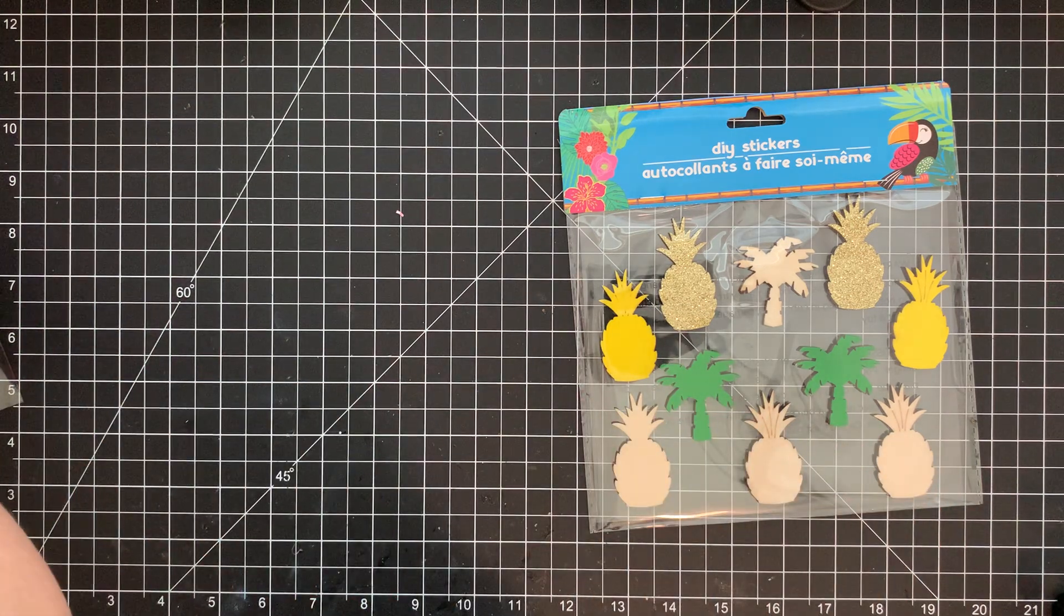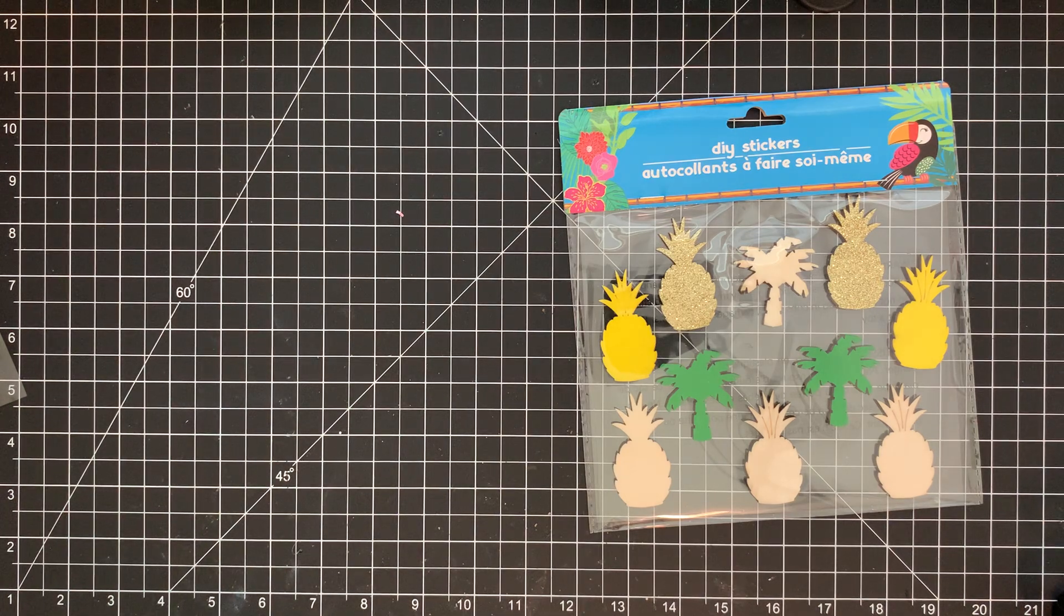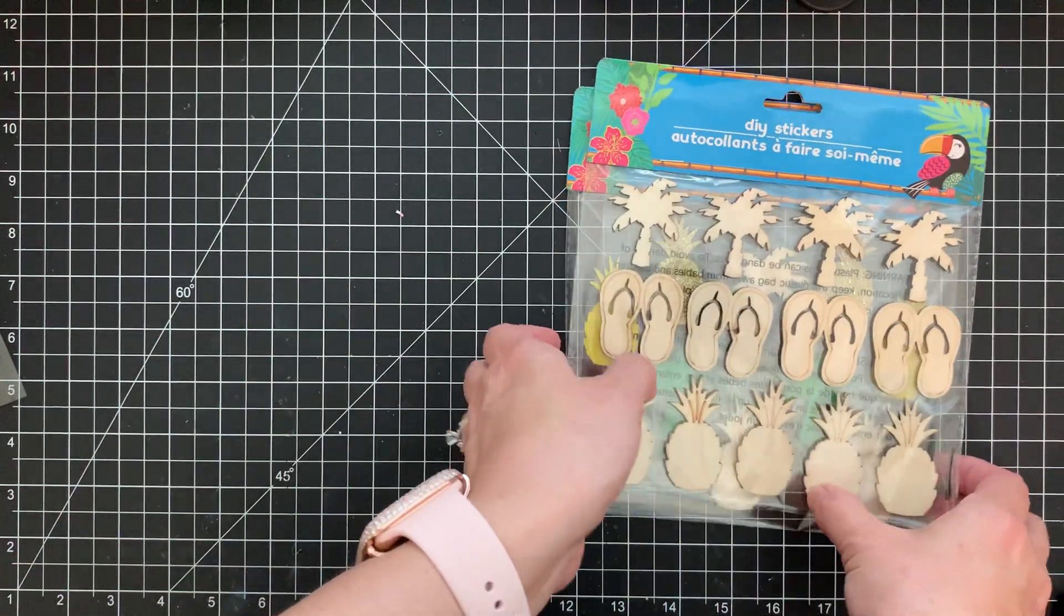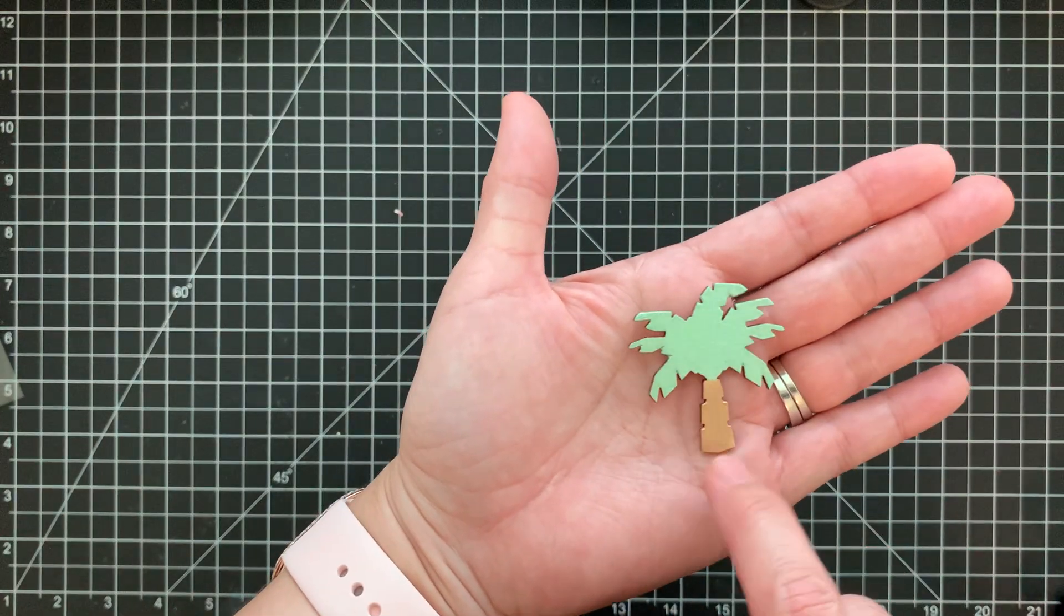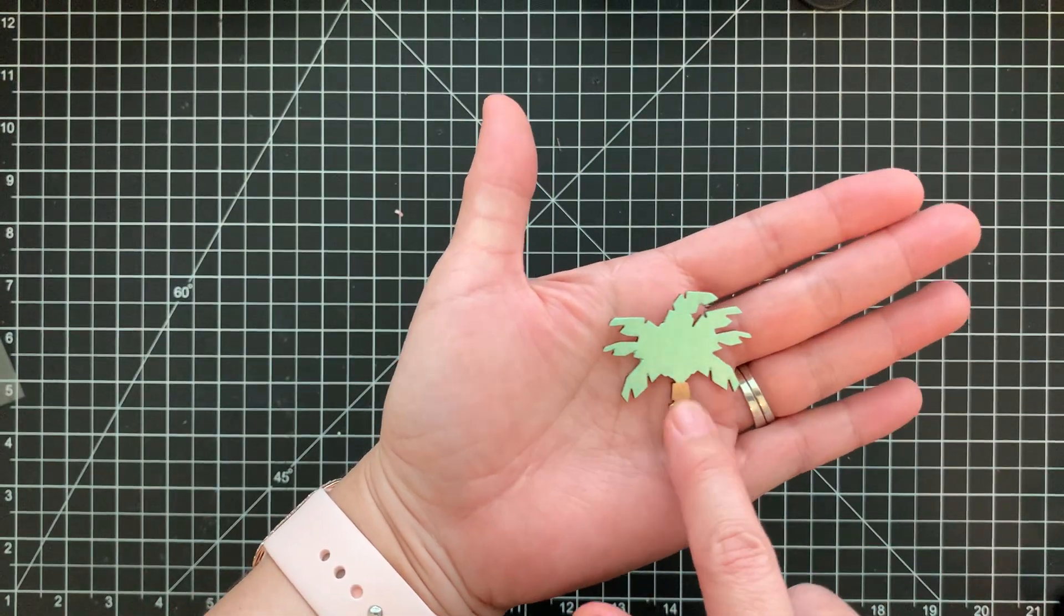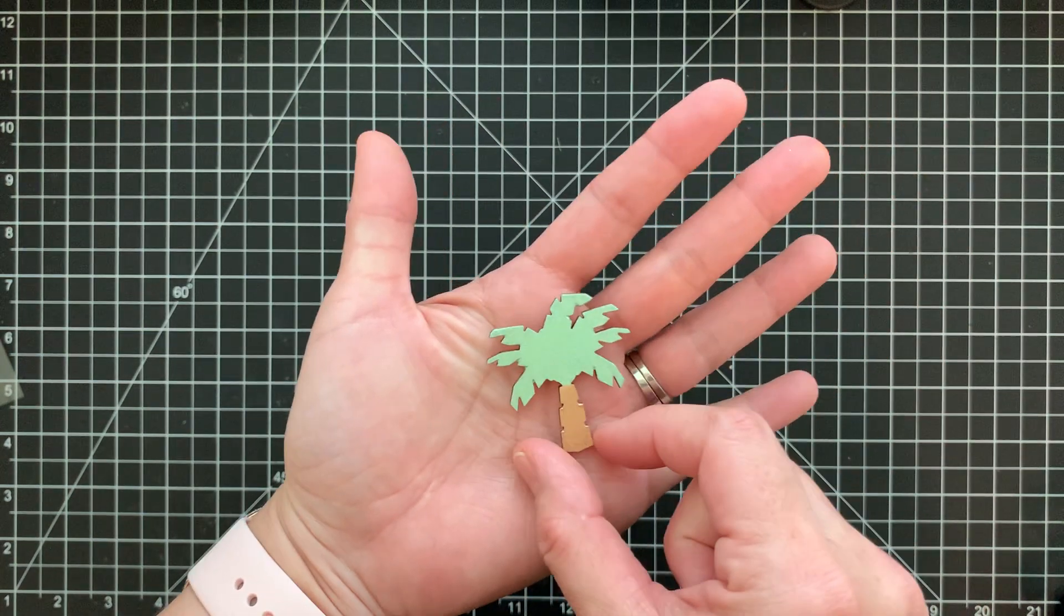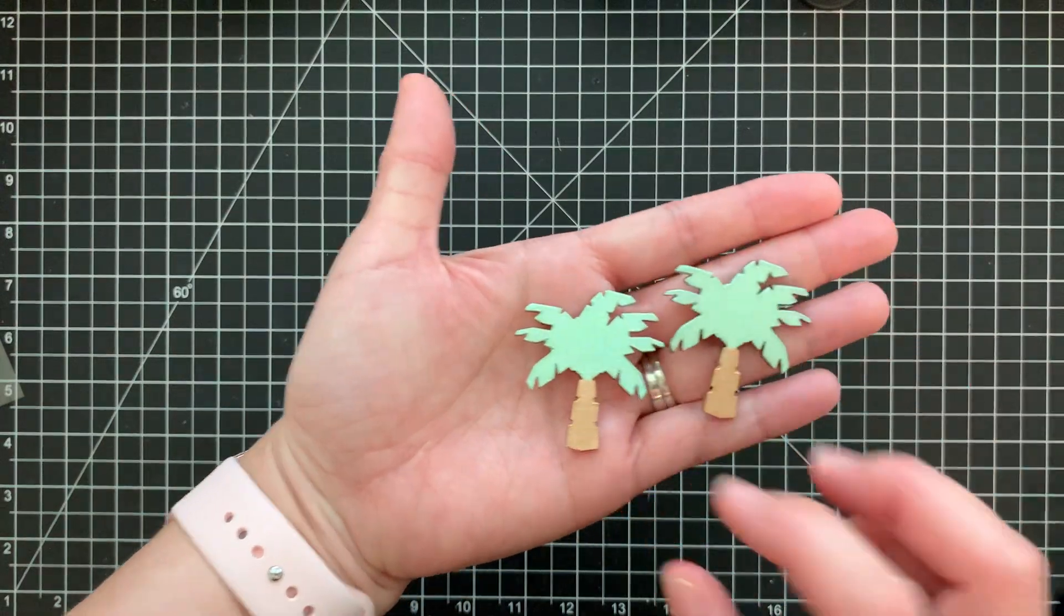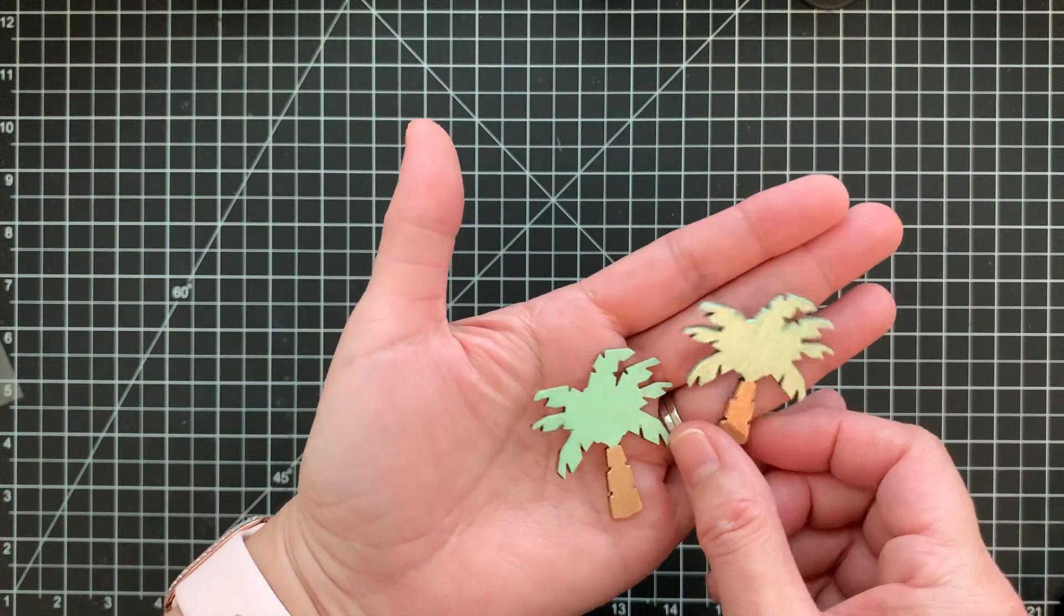And then I also made some palm trees, which are from the other set, this set here, which you can paint however you want. And so with those, I went ahead and used the gold, my metallic gold and my pearlescent green. And so I made a few of those, all four of them actually. That's how they turned out. Just like that. So I like those.